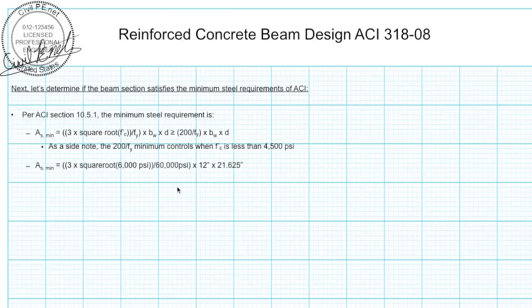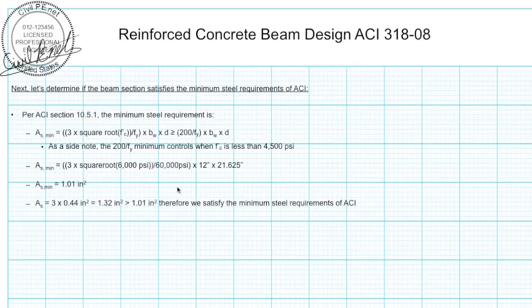In our case we calculate A sub S min and we get that we need a minimum area of steel of 1.01 inches squared. Luckily we have 1.32 inches squared, which is greater than 1.01, so we've satisfied this minimum steel requirement of ACI.